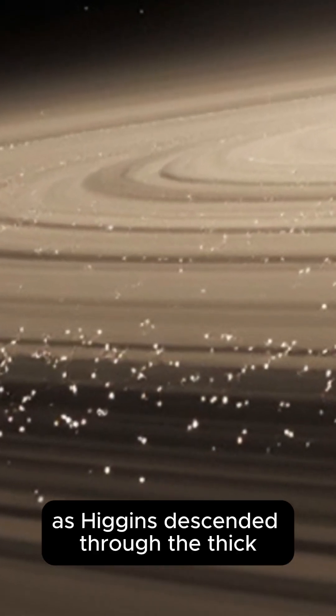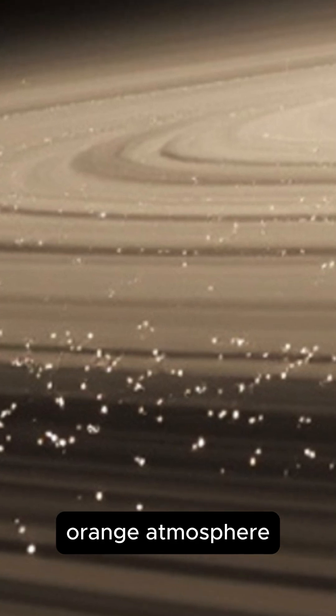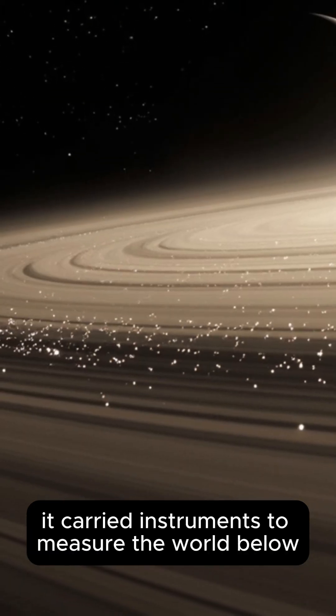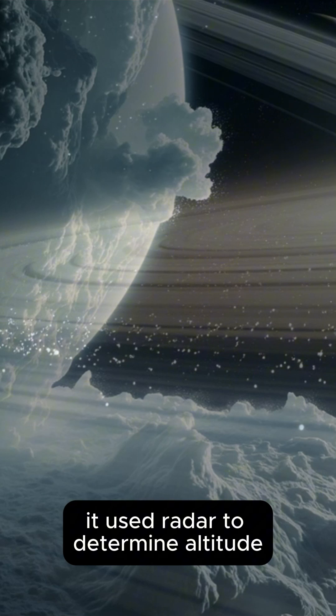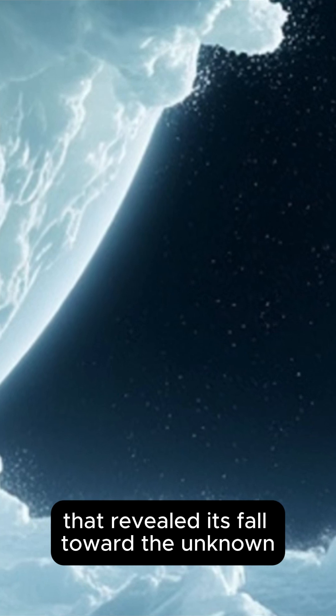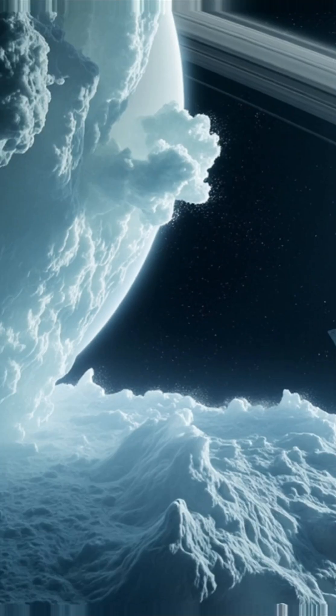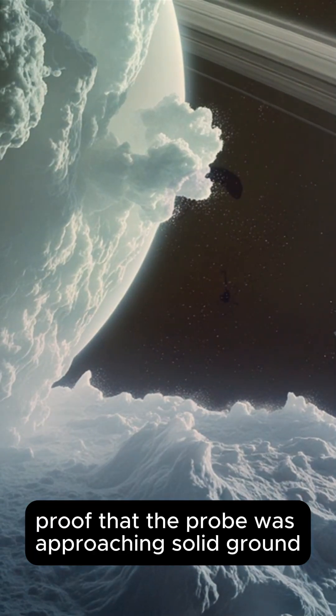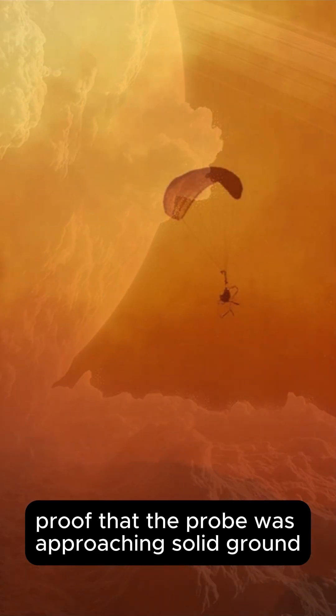As Huygens descended through the thick orange atmosphere, it carried instruments to measure the world below. It used radar to determine altitude, sending back echoes that revealed its fall toward the unknown. These signals were our guide—proof that the probe was approaching solid ground.